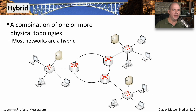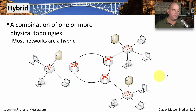A hybrid network is when we're combining a lot of these topology types into one single view. A good example is having multiple star topologies and then connecting all of these sites together with a ring. We've taken different kinds of topologies and brought them together into something that is now a hybrid of multiple types.